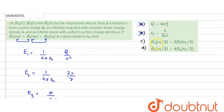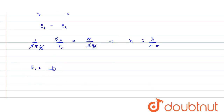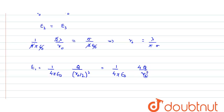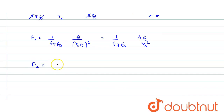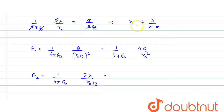Now checking option C: E1 at r₀/2 equals 2 times E2 at r₀/2. E1 at r₀/2 equals (1/4πε) times Q divided by (r₀/2)², which gives (1/4πε) times 4Q divided by r₀². Now E2 at r₀/2 equals (1/4πε) times 2λ divided by (r₀/2).